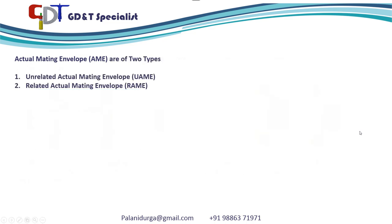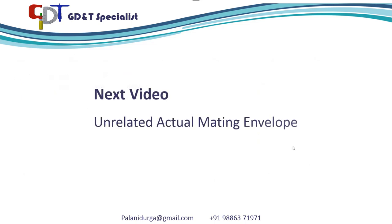In actual mating envelope there are two types: unrelated actual mating envelope and related actual mating envelope. In my next video I will be explaining about unrelated actual mating envelope for the shaft.